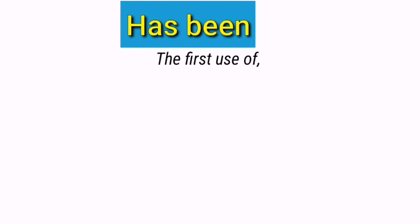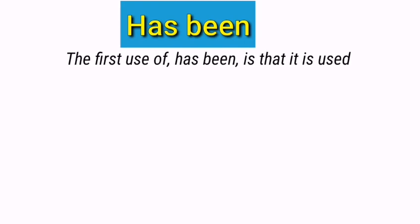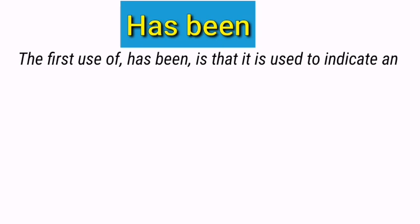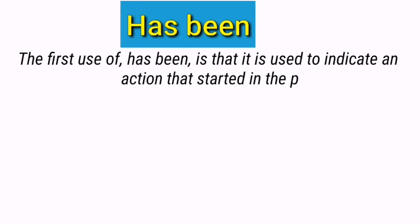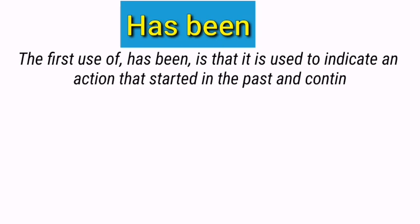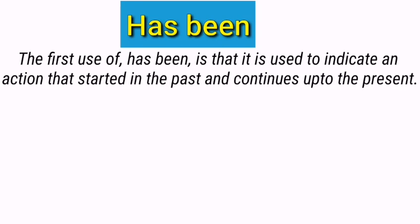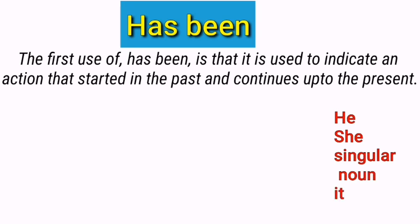The first use of 'has been' is that it is used to indicate an action that started in the past and continues up to the present. Simply, it means it is used to construct a present perfect continuous tense. You need to remember that 'has been' is used with these subjects: he, she, singular noun, and it. Just look at these examples.